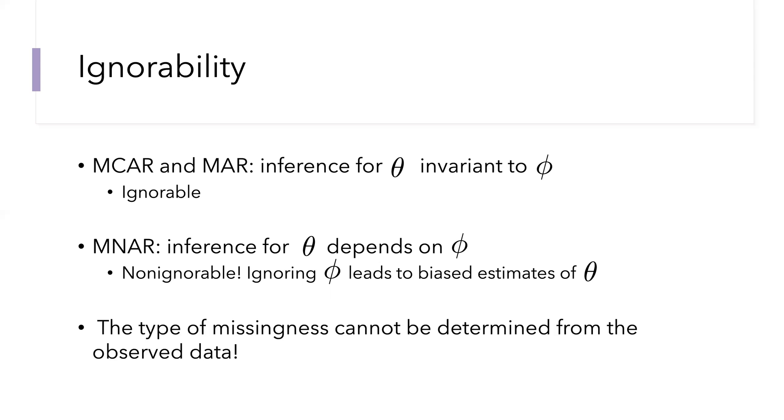Most importantly, none of these missing data types, missingness types, can be determined from the observed data. You can't look at any observed data and tell whether it's MCAR, MAR, or MNAR. You can't tell whether it's ignorable or non-ignorable. That's why the lecture that Nikolai gave in the last video is so important, because we have to use our knowledge about mass spectrometry and proteomics to make plausible assumptions about the most likely types of missingness. In particular, for proteomics, we do indeed suspect that there are important non-ignorable missingness mechanisms.